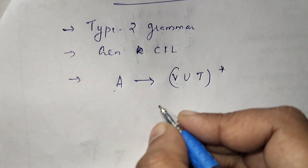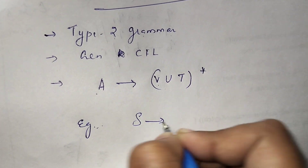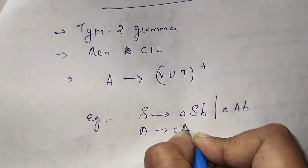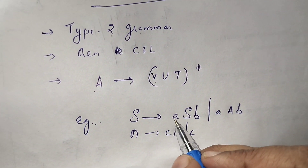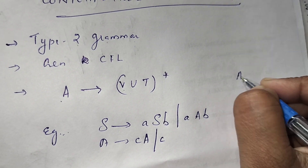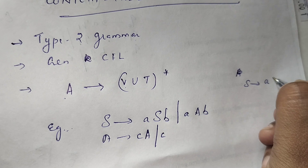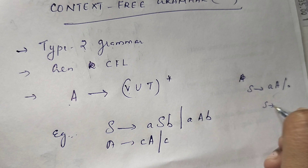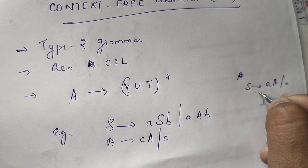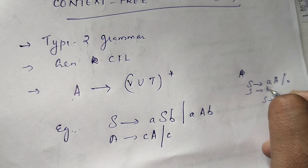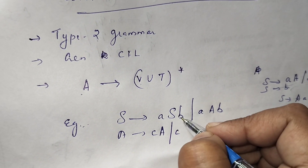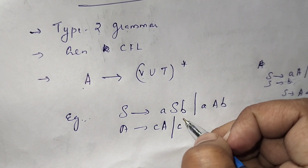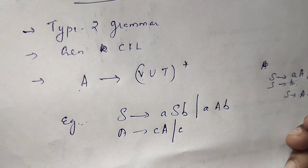For example: S → ASB | AAB and A → CA | C. In regular grammar, the RHS has a single terminal or a single non-terminal followed by a terminal. But here, you can see a terminal, then a non-terminal, then another terminal — a combination of terminals and non-terminals — so this is a context-free grammar.